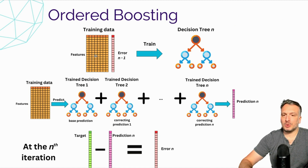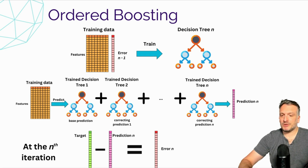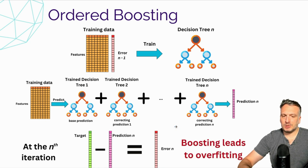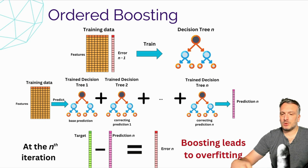Now let's look at ordered boosting. When we train trees in the gradient boosting algorithm, we train a tree, generate a prediction, and generate the target for the next iteration using the same tree. This means we use the target to learn the target in the previous iteration, which leads to a kind of data leakage and overfitting. Gradient boosting and earlier boosting algorithms are known to overfit quite a bit, partly because we overly exploit patterns seen in the training data.